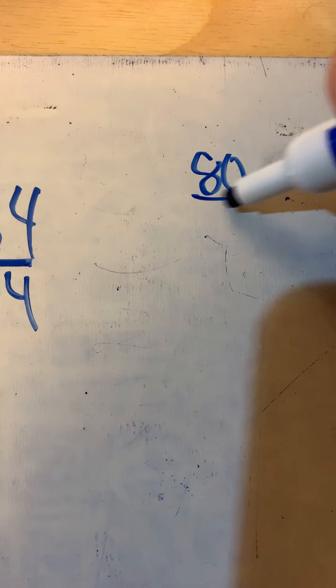If you're having trouble doing that division, break up the 84. You could break it up into 80 divided by negative 4 plus 4 divided by negative 4.